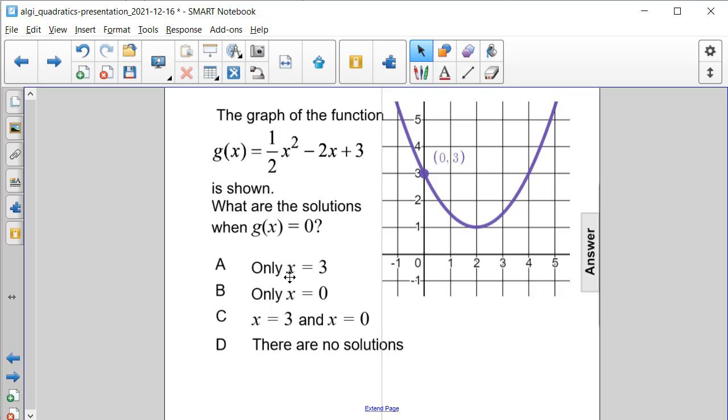Is it A, only x = 3? Is it B, only x = 0? Is it C, x = 3 and x = 0? Or is it D, there are no solutions?